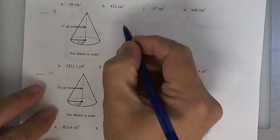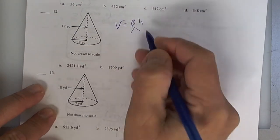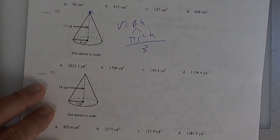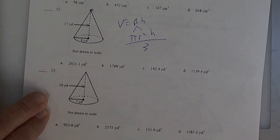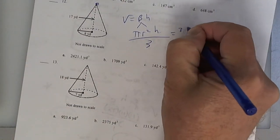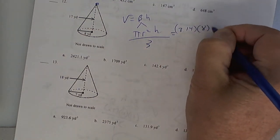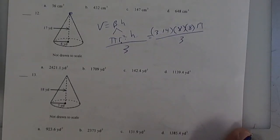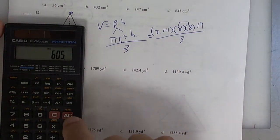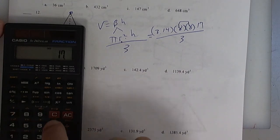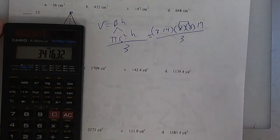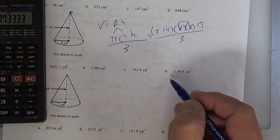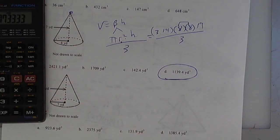Let's do the cone. Volume equals big B times H — the base is a circle — so that's pi radius squared times the height, and since it comes to a point, divide by 3. Pi is 3.14, the radius is 8 — write it twice because it's radius squared — and the height is 17. So 8 times 8 is 64. Take 64 times 17, times 3.14, press equals, then divide by 3. I get 1138 — so it's got to be 1139.